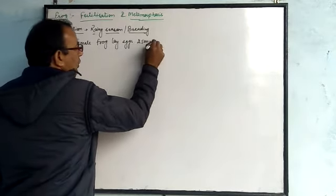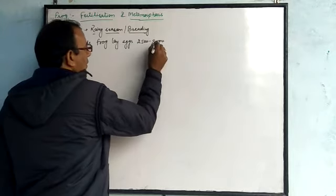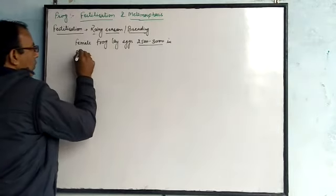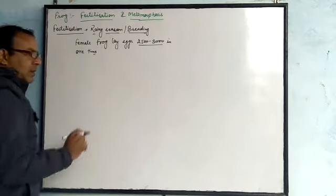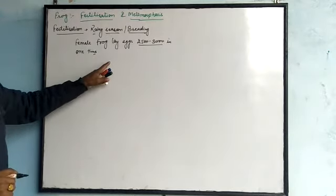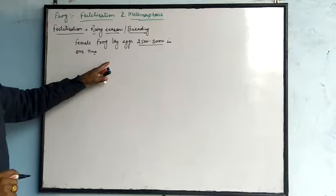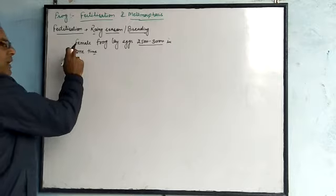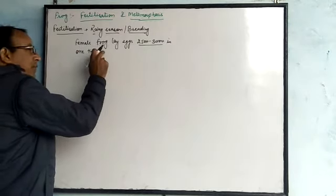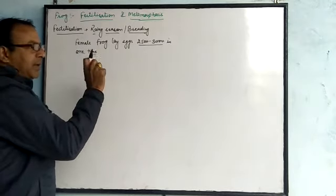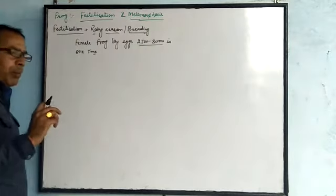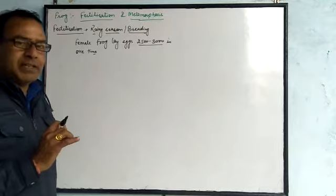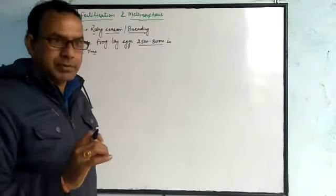A female frog lays 2,500 to 3,000 eggs at one time. During the laying of eggs, the male frog climbs up the body of the female frog and holds tightly with the help of a copulatory pad. This copulatory pad is present on the first digit of the fore legs.